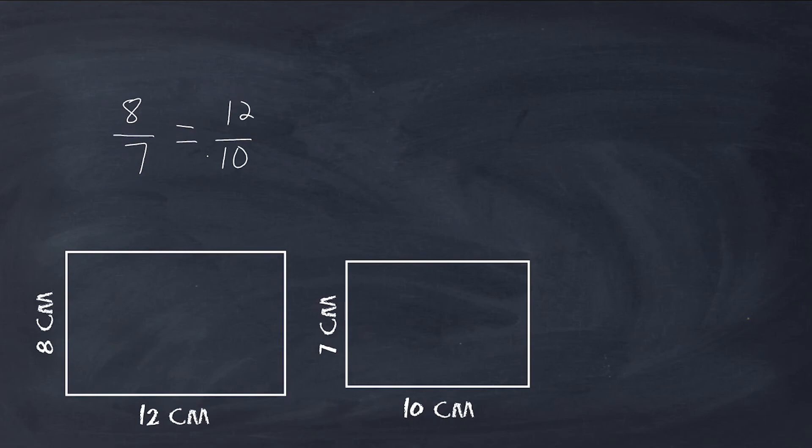Now notice when I started with this ratio over here, I started with the value of 8, which belongs to this rectangle. And then the denominator, I used a value from the other rectangle. So I started with the rectangle on the left on the top or the bigger one. And then I went to the smaller one on the bottom. So I have to follow the same order when setting up a proportion to check for similarity. So we're going to cross multiply here and we have 8 times 10, which is 80. And over here we have 7 times 12, which is 84.